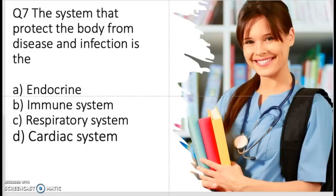Question number seven: the system that protects the body from disease and infection is A, endocrine, B, immune system, C, respiratory system, or D, cardiac system. The correct answer is the immune system, because the immune system is the one that protects our body from foreign antigens.